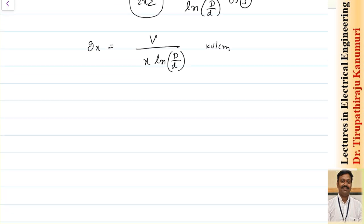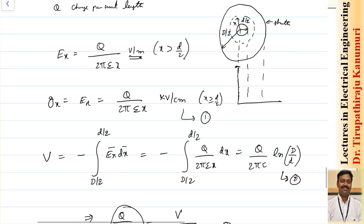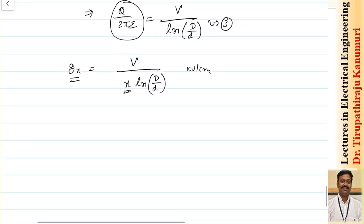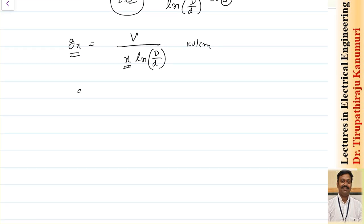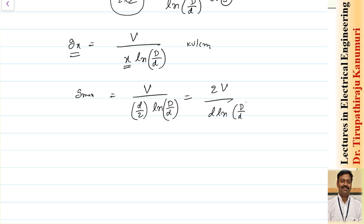From this formula, as the distance x from the center of the conductor increases, the gradient decreases. The gradient is maximum when x is minimum — that is, at the surface of the conductor (x = d/2) — and minimum when x is maximum (x = D/2). The maximum gradient is: g_max = 2V / [d · ln(D/d)], in kV/cm. Let this be equation number 4.